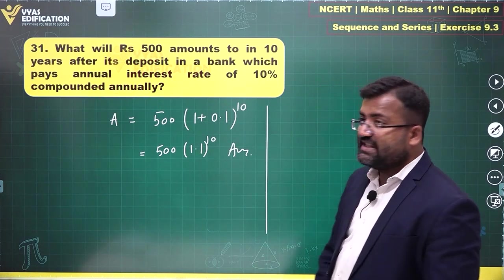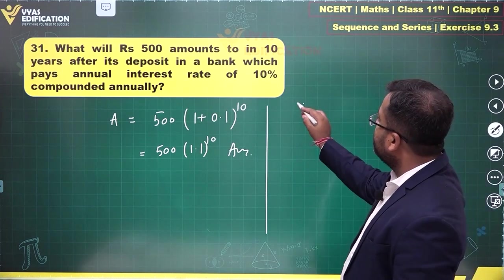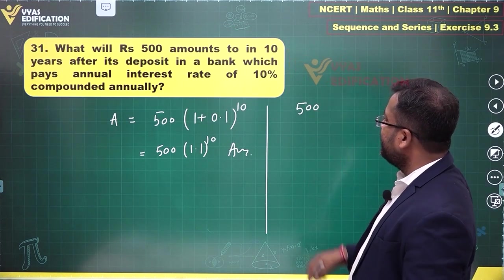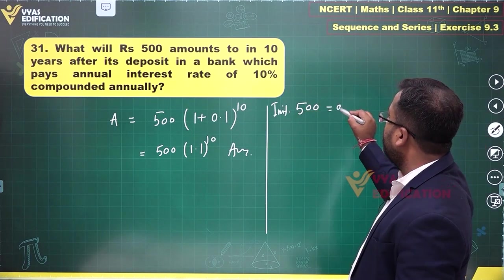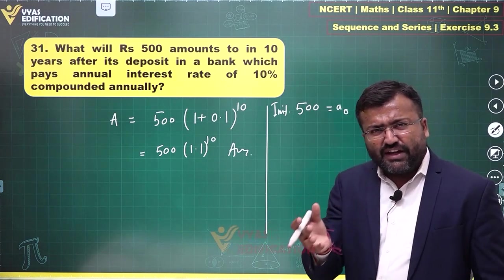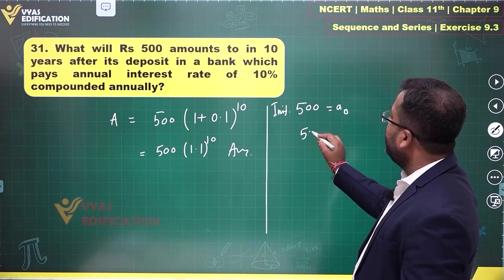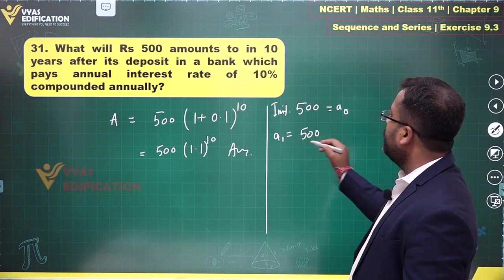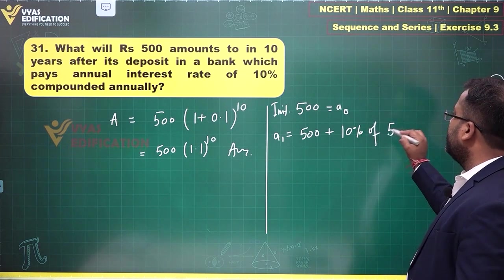And if you want, we can just check using first few terms. If this is 500 amount initially, this is initial amount, let us call this A0. At the end of one year, what will happen? You'll get some interest on this. A1 will be equal to 500 plus 10% of 500. This is what you'll get.